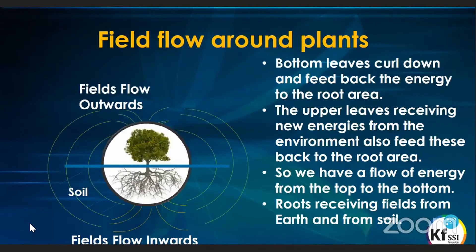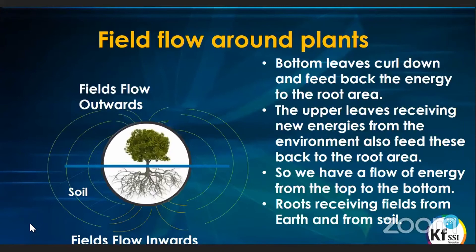The bottom leaves on many plants curl down and feed this energy back to the root area. The upper leaves receive new energies from the environment and also feed these back down to the root area. So we have a constant flow of energy from top to bottom. The roots are also receiving fields from the earth and from the soil — creating a huge interaction and flow of energy that we don't see, because we only see the tree itself.